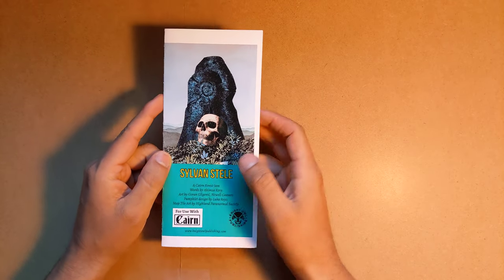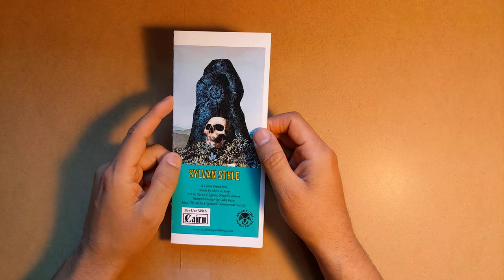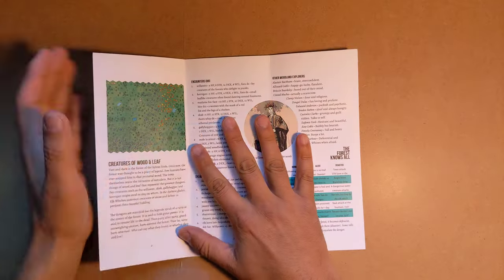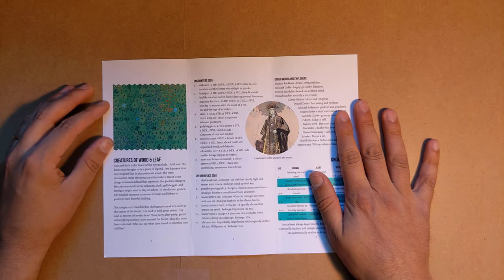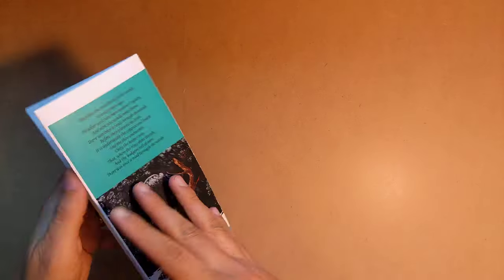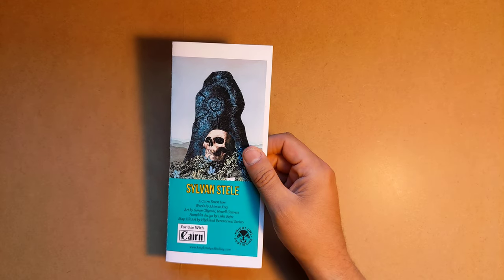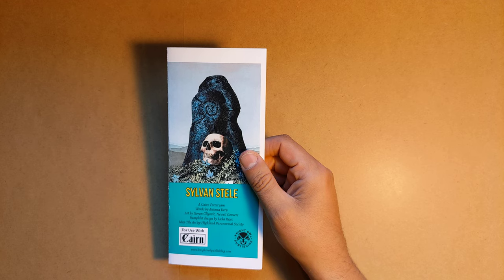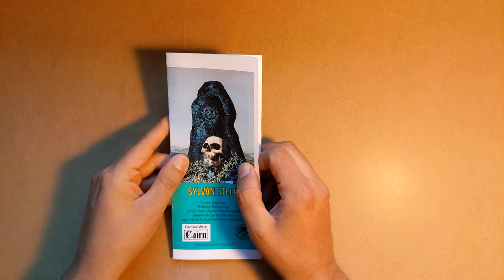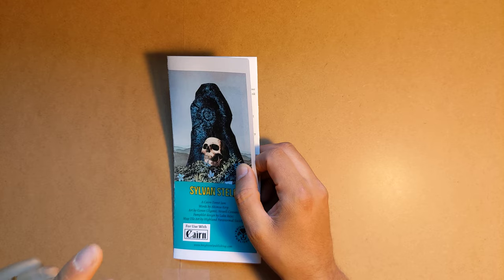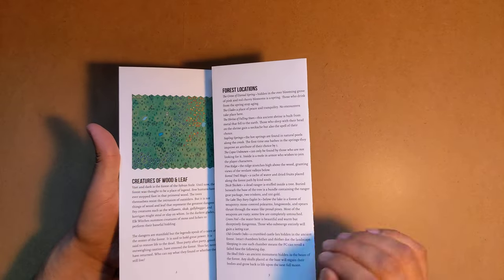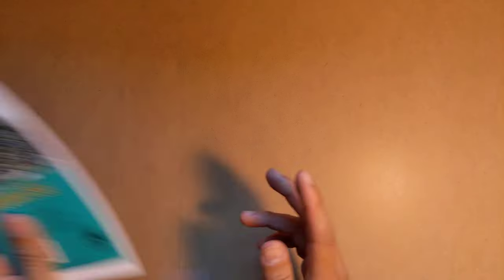First up we have Sylvan Steel, which is a pamphlet adventure that takes place in a legendary forest that legend says has a Cairn at the center. And the Cairn has the ability to restore the dead to life. Something along those lines. It's pretty awesome. I love pamphlet adventures. I should mention it's by Ahimsa Kirp and has art by a few different fairly popular artists in the OSR. The design itself is from Luca Reitz, the pamphlet design. And you can see the tile set that Nate Treme put out there. It's really great.